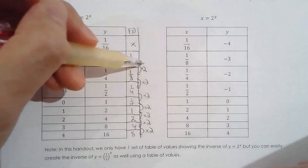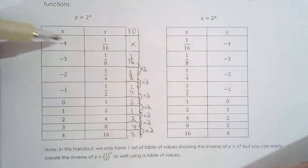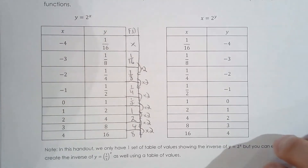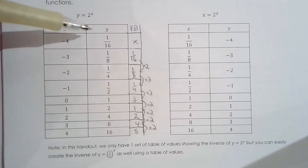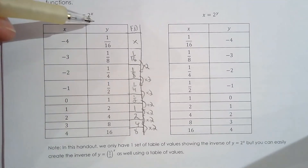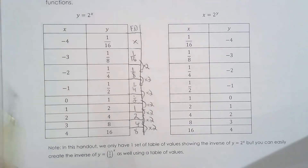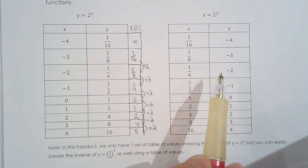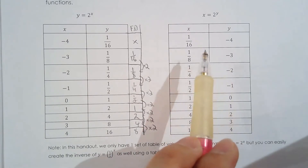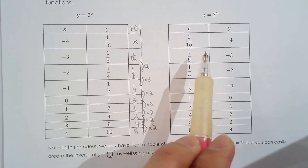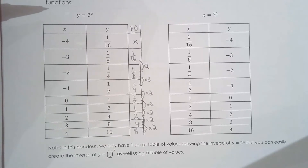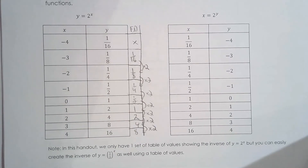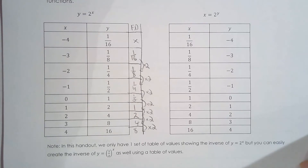There is a common ratio between successive first differences — multiplying by two each time (e.g., 1/16 to 1/8, 1/8 to 1/4) — which proves the table represents an exponential relationship. Now, taking the inverse of this table is easy: x becomes y and y becomes x, or equivalently, domain becomes range and range becomes domain. We now look at the graph of the inverse of an exponential function.